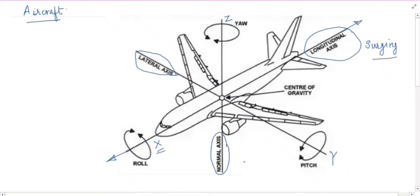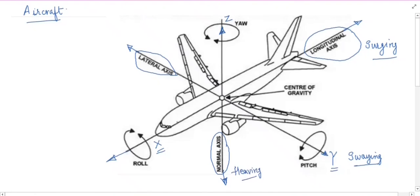Similarly, this aircraft can move left and right along the lateral axis, which is the y-axis, and this left-right translational motion is known as swaying. This aircraft can also have translational motion along the normal axis, the z-axis — it can go up or come down. This up-down motion along the normal axis is known as heaving. So we have seen that this aircraft can have three translational motions along the longitudinal, lateral and normal axes.